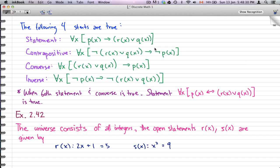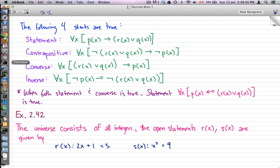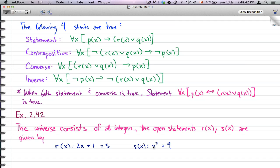Here we're going to go through another example. In this example, the universe consists of all integers and the open statements R(x) and S(x) are as defined. R(x) is 2x plus 1 equals 5, and S(x) is x squared equals 9.